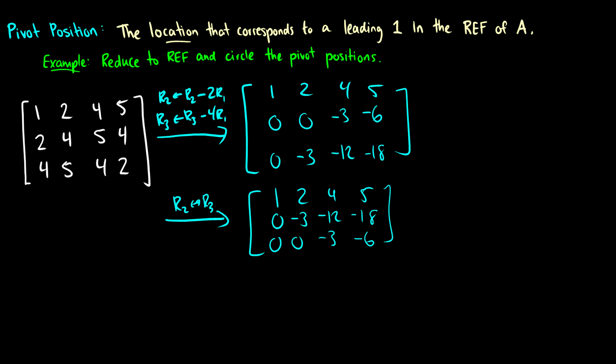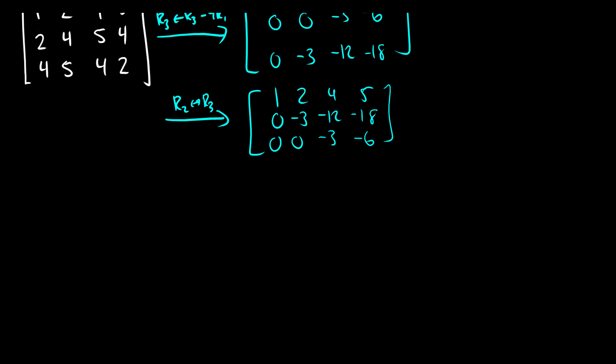Let's divide the second and third row by negative three. So we get negative one third row two and negative one third row three. This will make numbers easier. So we have 1, 2, 4, 5. This will be 0, 1, 4, 6, and 0, 0, 1, 2.